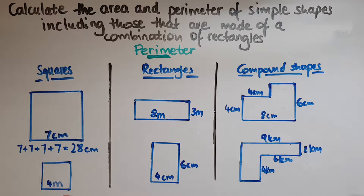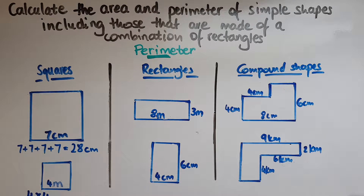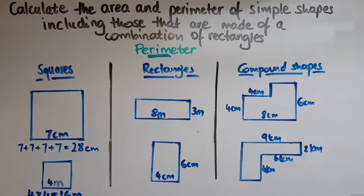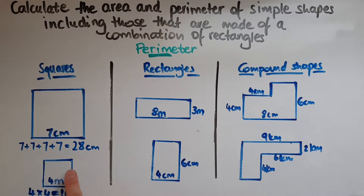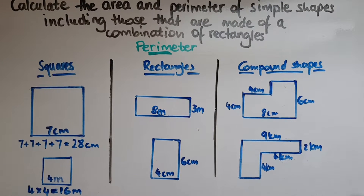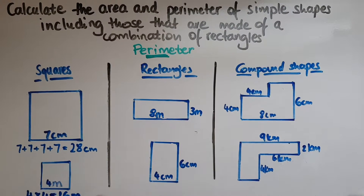Now we've got another square where each side is four metres. Four times four because there are four sides of four metres each — we can write it as four times four, or four plus four plus four plus four, and that gives us 16 metres. It's metres because we're inputting metres: four and four is eight, and eight and another four is 12, and another four is 16.